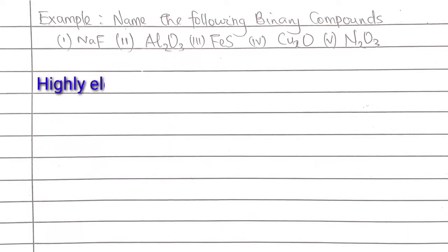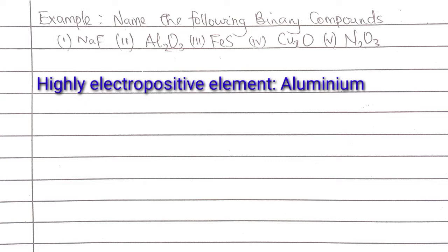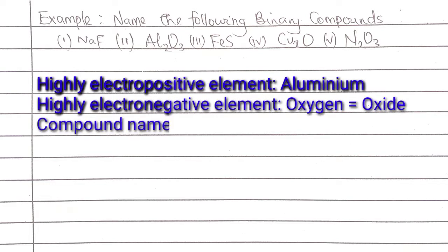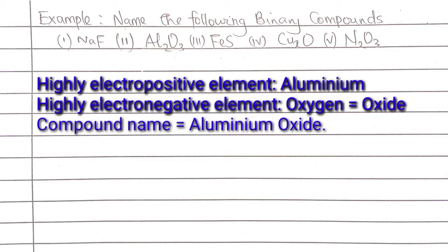For Al2O3: Al is aluminum and O is oxygen. Aluminum is in group 3, so its oxidation state need not be mentioned in its binary compound name. Oxygen is highly electronegative here, so it changes from oxygen to oxide. We have aluminum oxide. There is only one aluminum oxide because aluminum does not have varying oxidation states, so no need to give the oxidation number of aluminum or specify the number of oxygens — if you know it's aluminum bonding with oxygen, all you need to do is criss-cross.